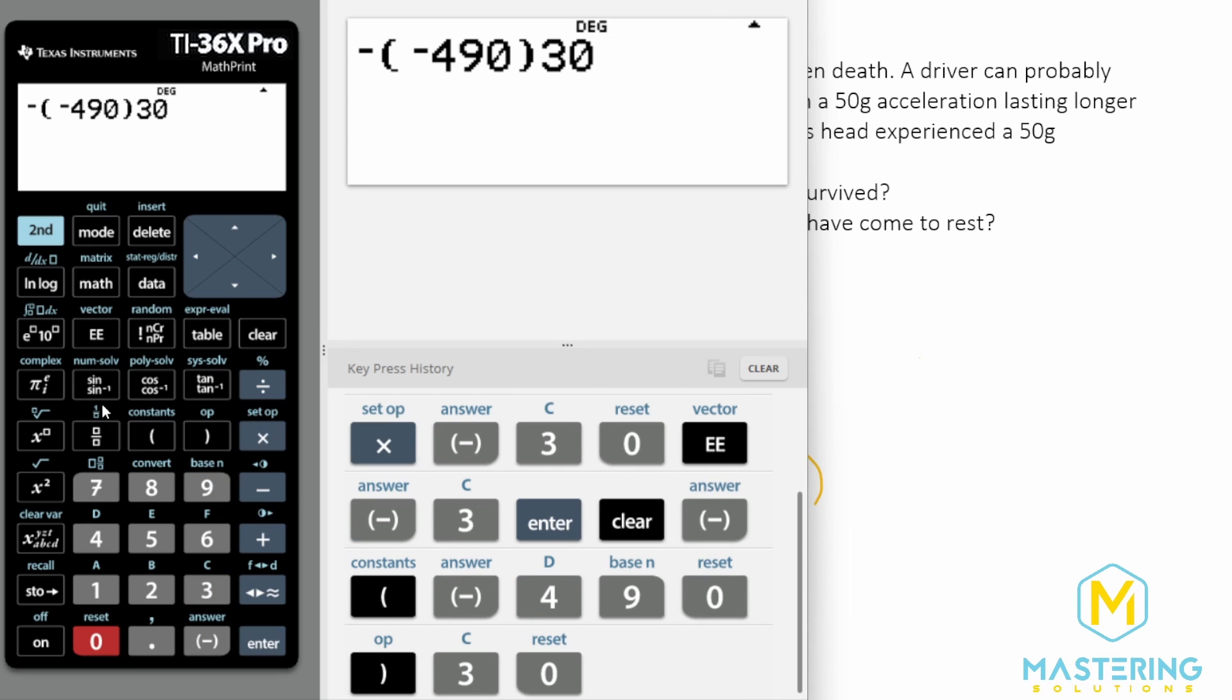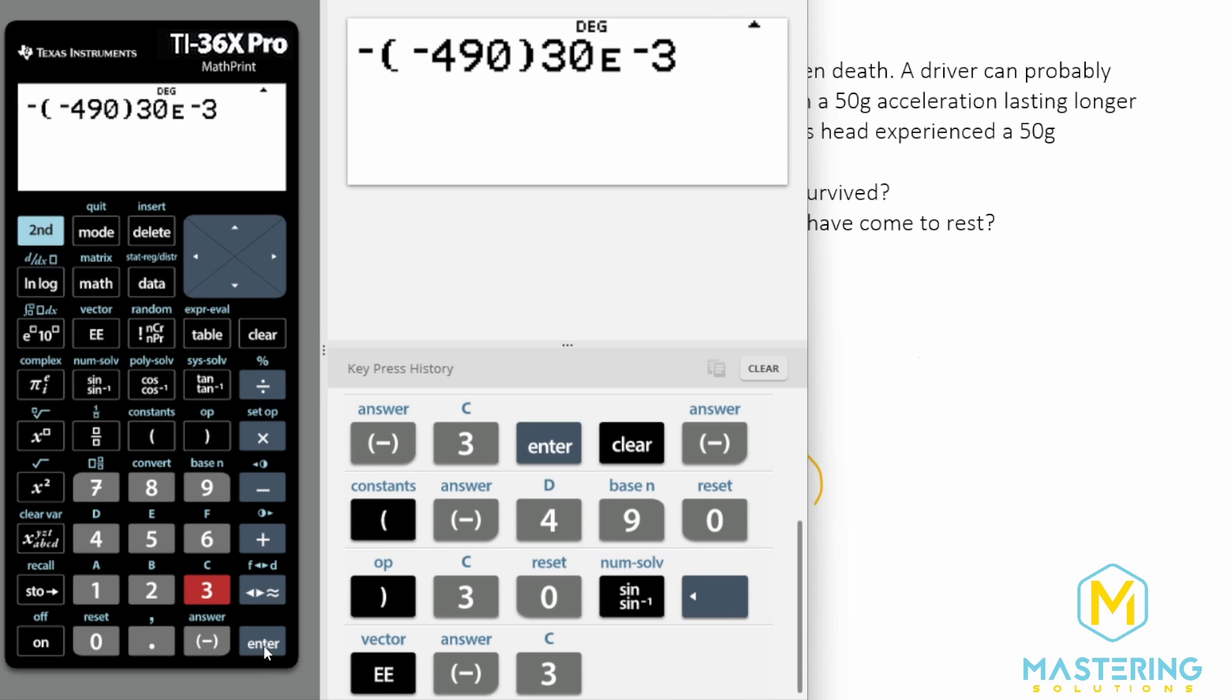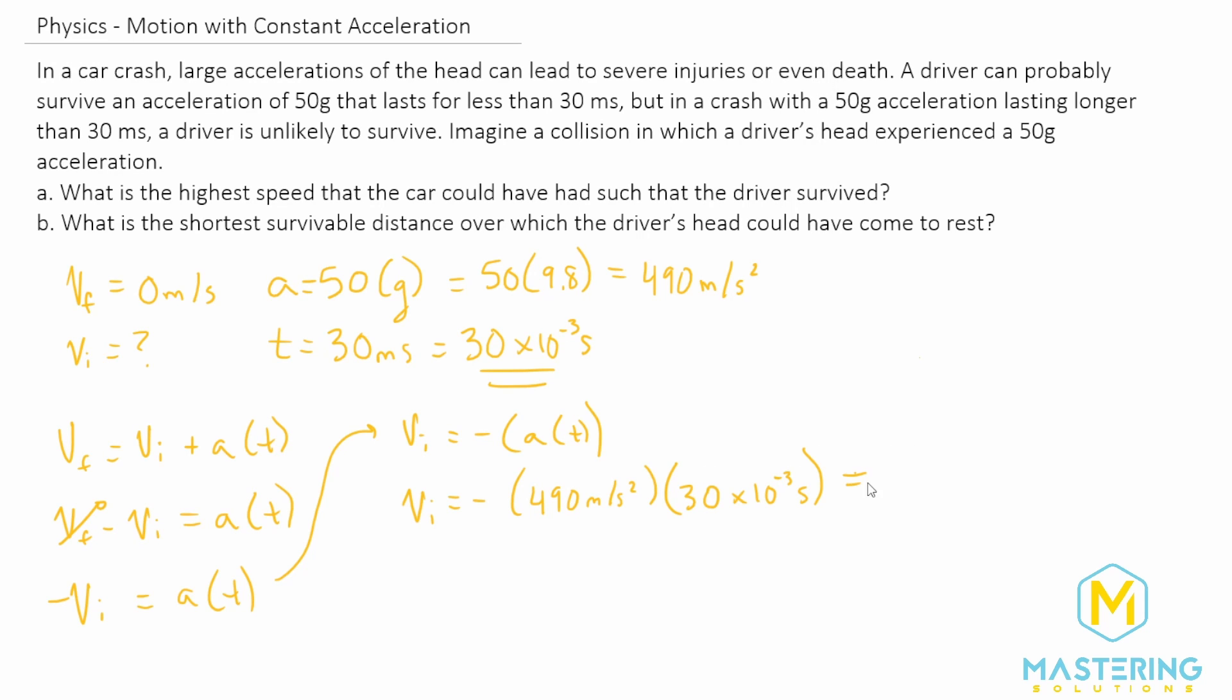which we said was 30 times 10 to the negative three. So we have 14.7 meters per second.